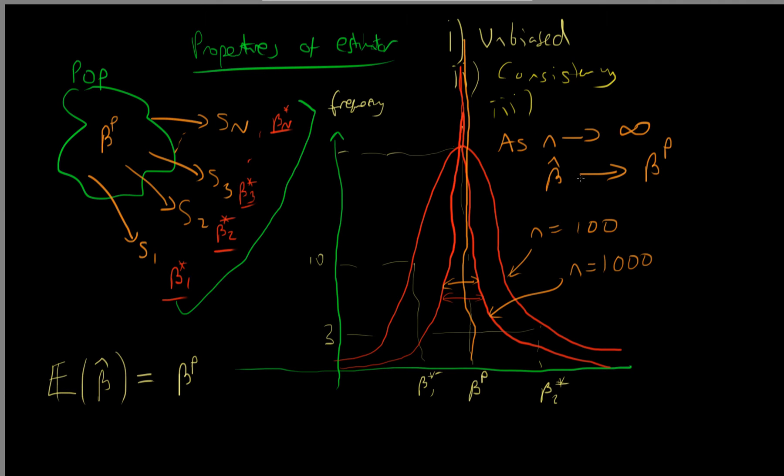So consistency is definitely a property which we would like a good estimator to have. It means that if I arbitrarily increase my sample size, as I let N go to infinity, or practically as I increase my sample size closer and closer to the population, I get a value from my estimator which is closer and closer to the population value. This is definitely a property we would like to have.